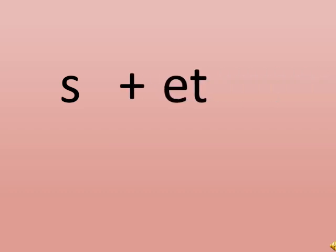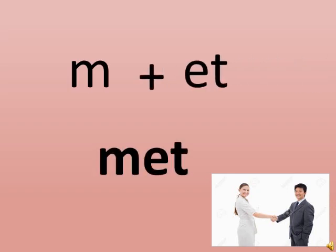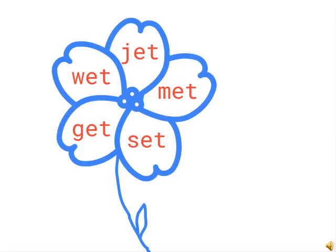What letter can we see? S. S says 's'. S plus ET is 'set'. S plus ET is 'set'. And M plus ET is 'met'.